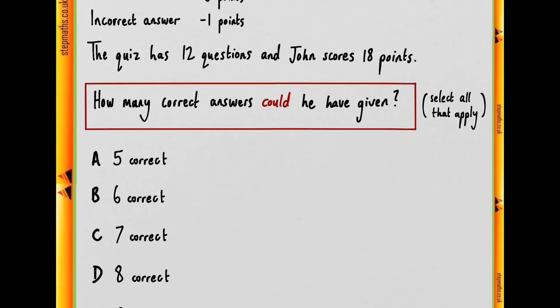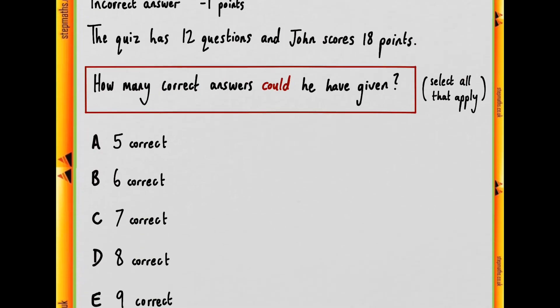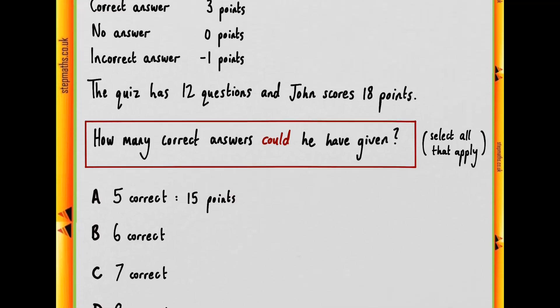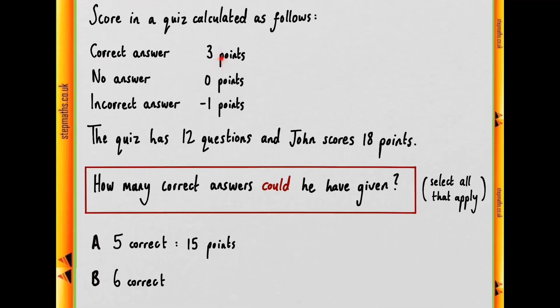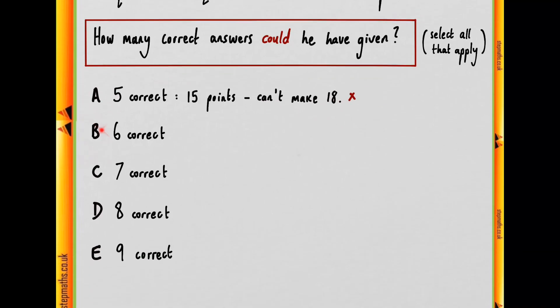So we'll start with five being correct. Well, five correct answers score you three points each, so we know that immediately he must have 15 points from correct answers. Now there's no other way to make points in the game other than getting correct answers, since these are zero and these are minus one. So he won't ever reach the 18 points that he ends up with. So since he can't make 18, this must be wrong. So A is wrong, let's move on to B.